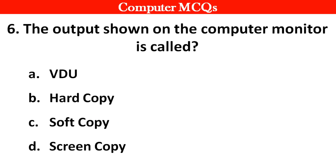The output shown on the computer monitor is called: option A VDU, B hard copy, C soft copy, D screen copy. Right answer is option C, soft copy.